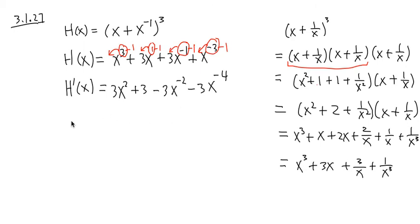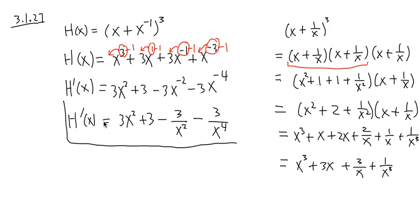Then the last step, perhaps, we can write this better a little bit. 3x squared plus 3. And this part can be written as minus 3 over x to the second power, positive exponents. And the last part is minus 3 over x to the positive 4 power. And that's it. This will be the derivative of the original function. That's it.